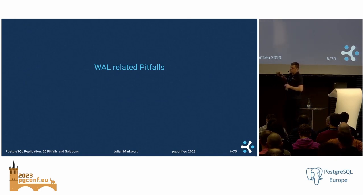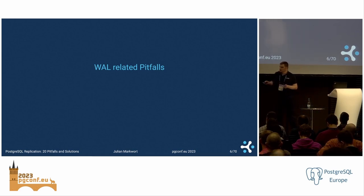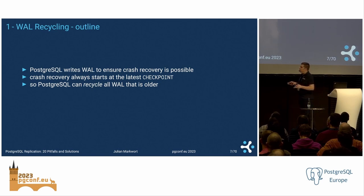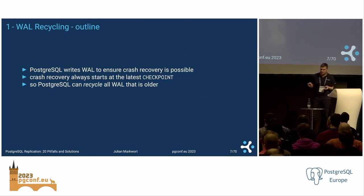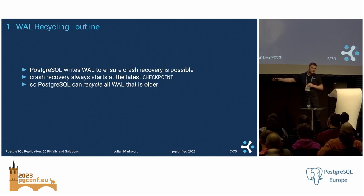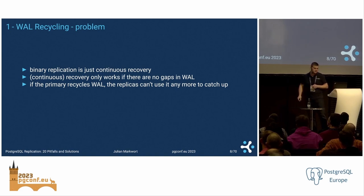The first section of pitfalls is WAL-related pitfalls. WAL stands for Write-Ahead Log, which is where PostgreSQL stores all the changes that all the transactions do — the transaction log. PostgreSQL writes the WAL to ensure crash recovery is possible. We only need to keep the WAL from the latest checkpoint for crash recovery purposes, and PostgreSQL can recycle or delete any WAL that is older than that, at least if there are no other special conditions.